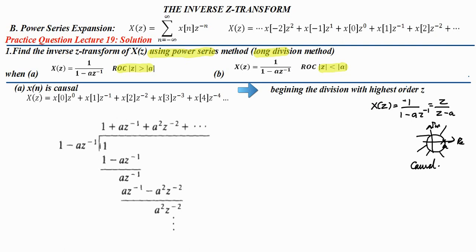If the signal is causal, it contains only negative powers of z, just like z raise to minus 1, z raise to minus 2, etcetera. There will not be any term like z raise to 1 or z square, because the signal is only on the positive side. And if you look at this transform, directly you can write the result like a raise to n into u of n — we know the standard result. The transform is z by z minus a, provided the modulus of z is greater than a. This is the standard result.